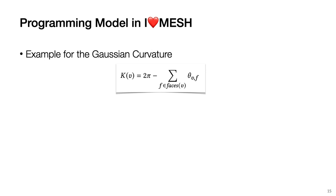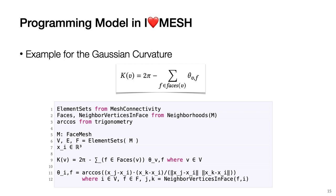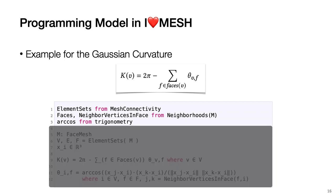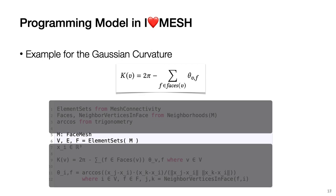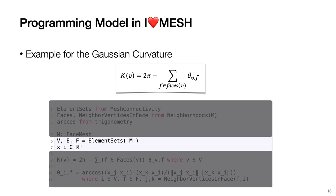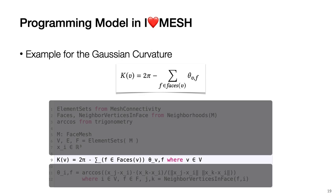The programming model in Ahad Mesh can be demonstrated by the expression for discrete Gaussian curvature on a triangle mesh. For each vertex, the Gaussian curvature can be defined as the angle defect. The first three lines import functions from built-in support. The mesh connectivity module provides access to the element sets and boundary matrices of a mesh. The neighborhoods module is initialized with the input mesh M declared on line 5. Line 6 accesses the element sets of M, and line 7 declares a second input parameter X of per-vertex positions. Line 9 is a direct translation of the equation, making use of the neighborhood function faces, which maps a vertex in M to the set of incident faces. Line 9 defines the function K that takes a mesh vertex as the parameter.